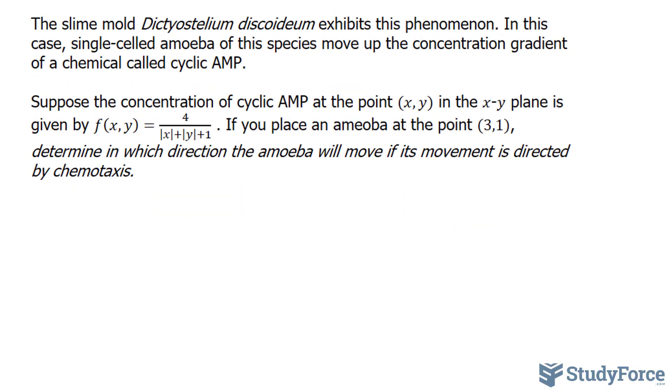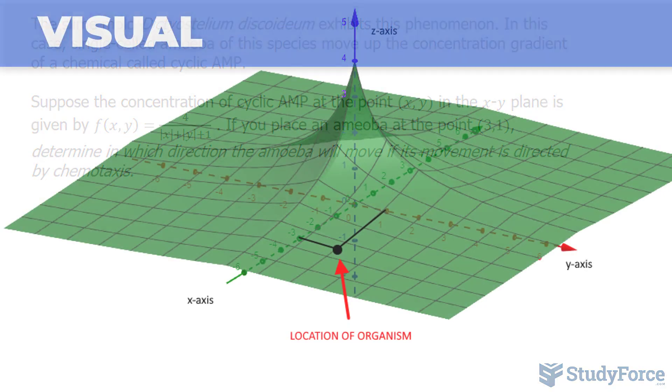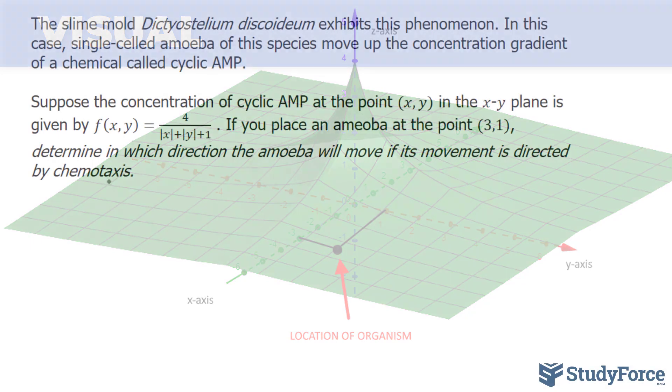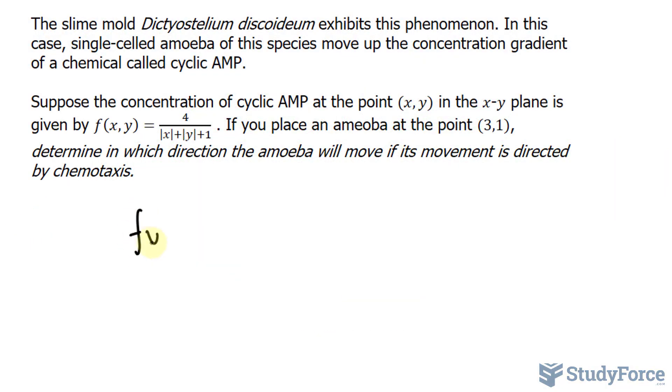So what we'll do is find the gradient of this function by first taking the partial derivative with respect to x and y. The derivative of this is easy to find. In fact, I'll rewrite it so that we have 4 bracket x plus y plus 1 raised to the power of negative 1. This is nearly identical to that.